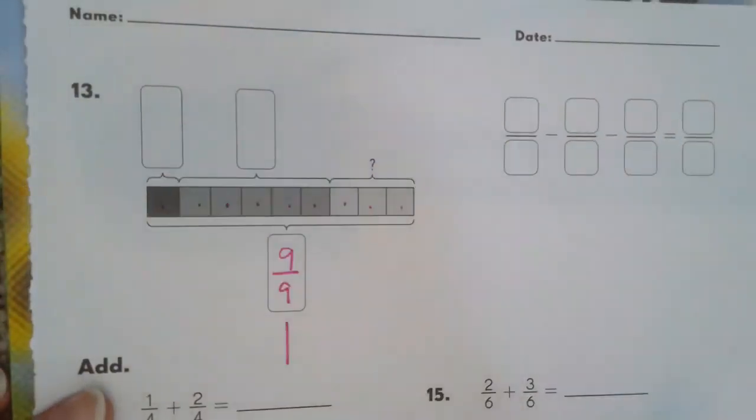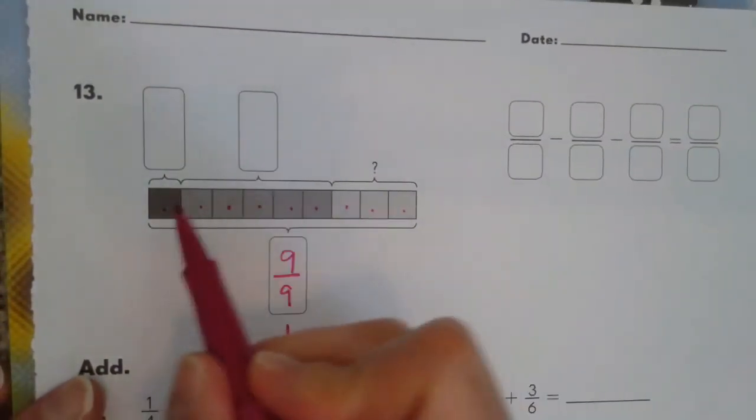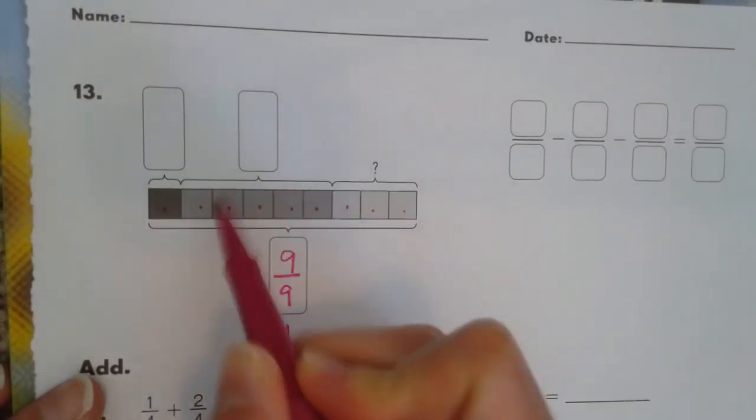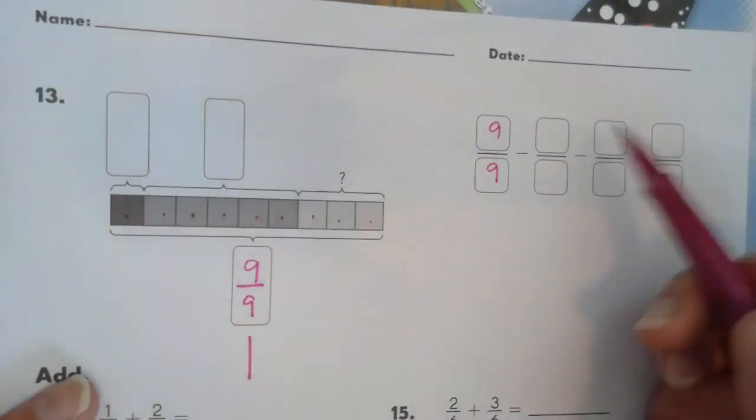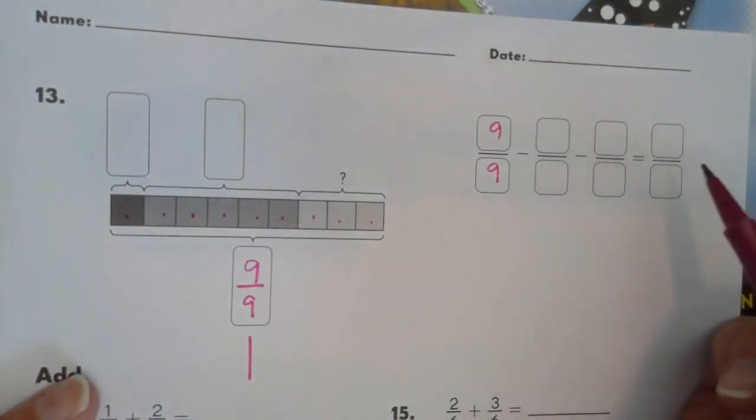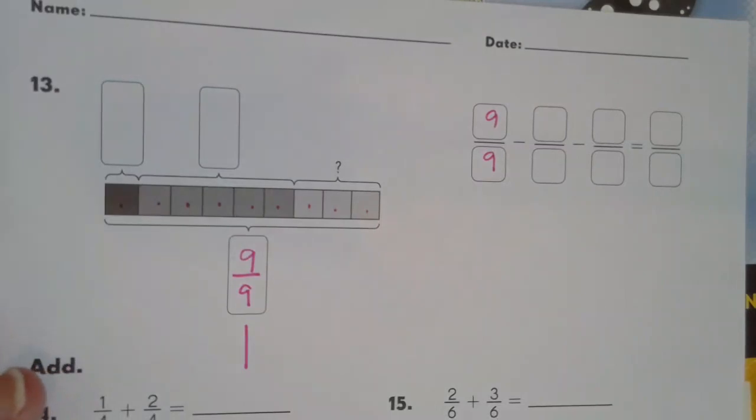That's worth 1 whole. And we have to subtract this amount and this amount to see how many are left. So, you're going to start with 9 ninths. And you're going to see how many you need to take away both times to figure out how many are left.